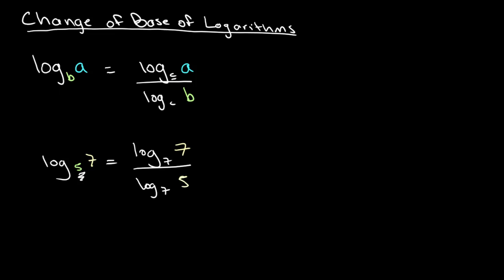We can do this with any base. So let's say that we want to get this in terms of log base 5. We can write this as log base 5 of 7 divided by log base 5 of 5. In both of these cases, log base 7 of 7 is equal to 1, and log base 5 of 5 is also equal to 1 if we wanted to further simplify. But right now I'm just explaining what the change of base of logarithms does.